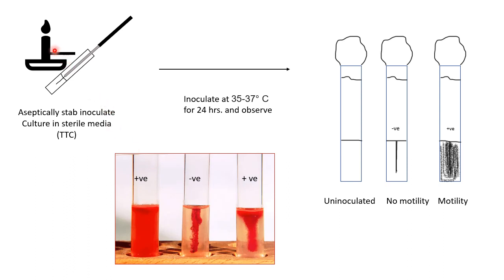Aseptically transfer your culture to the sterile media — just once or twice is sufficient. Then incubate. After incubation, in the negative tube you will see growth only in the line of inoculation with no diffusion of bacterial growth and no red color. In case of the positive tube, the whole tube has turned red, meaning the organism is motile. In a third tube, you can also observe red color diffused beyond the line of inoculation, which is also positive.